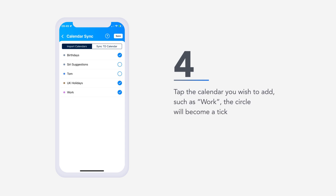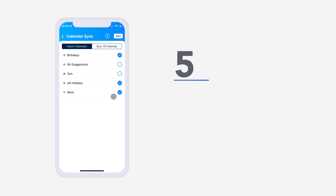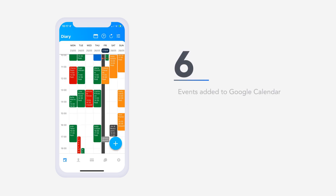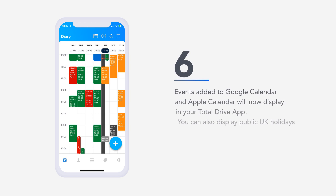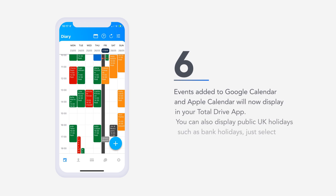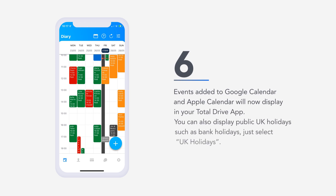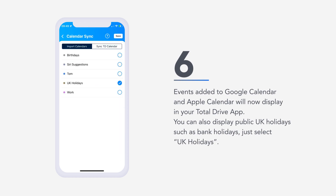The circle will become a tick. Five, tap save. Six, events added to Google Calendar and Apple Calendar will now display in your Total Drive app. You can also display public UK holidays, such as bank holidays. Just select UK holidays.